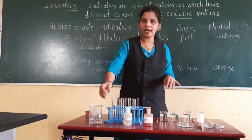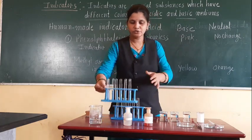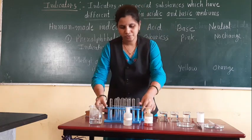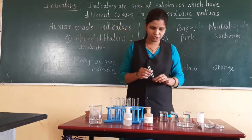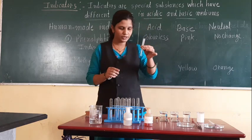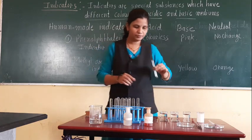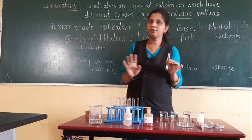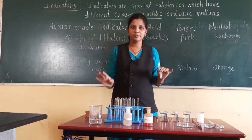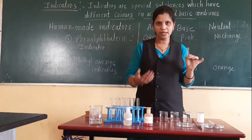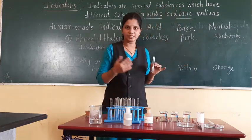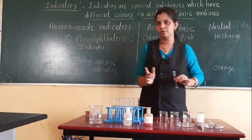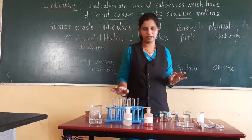Here I have a test tube stand. First we will take one test tube. In this test tube, we have solutions A, B, C, and D. We don't know whether solution A is acidic, basic, or neutral; same for B, C — we don't know anything. With the help of this phenolphthalein indicator, we have to identify whether each solution is acidic or basic.